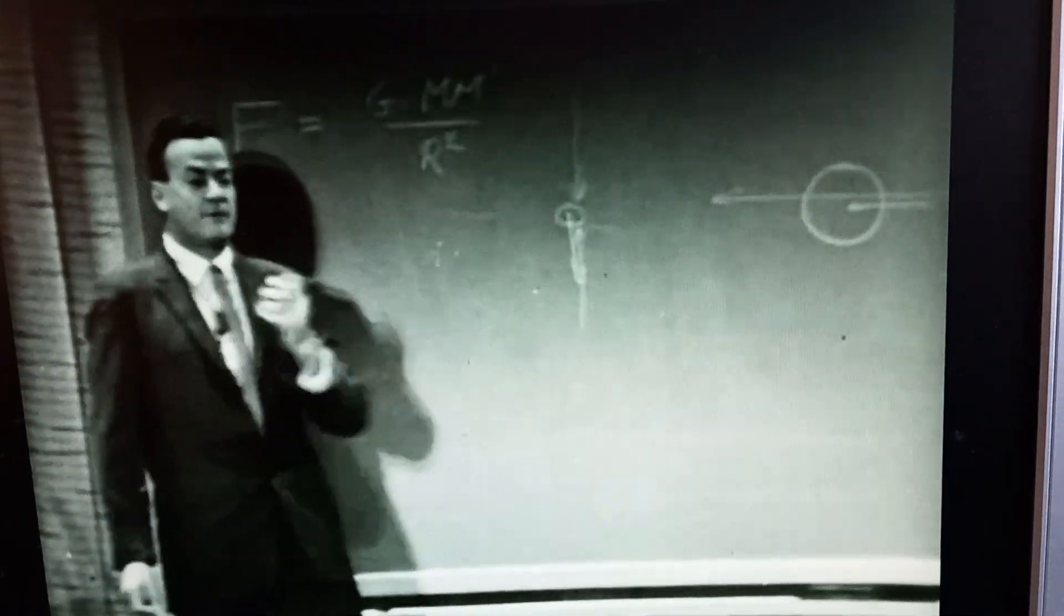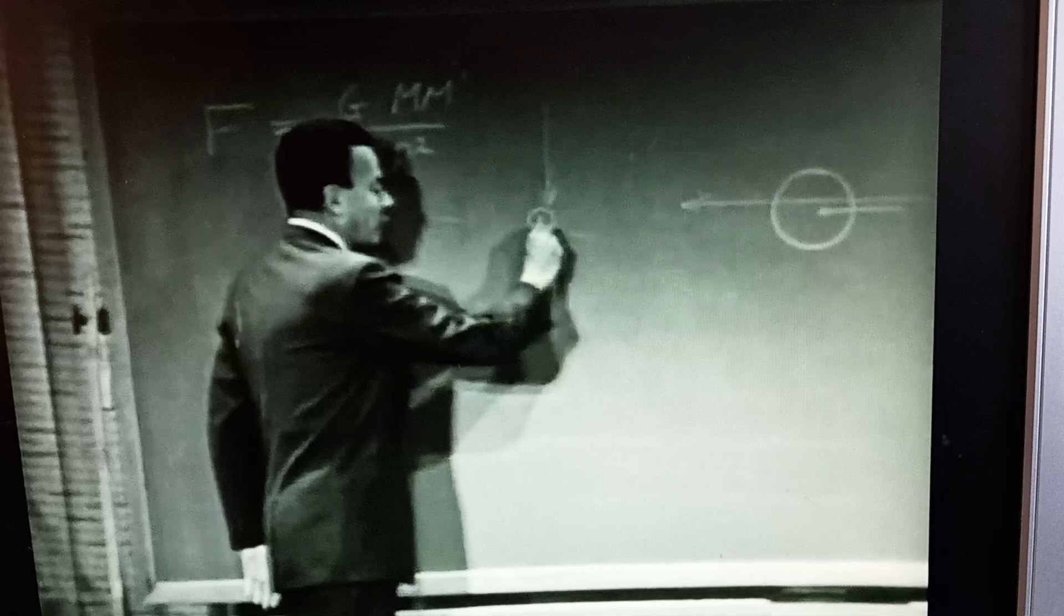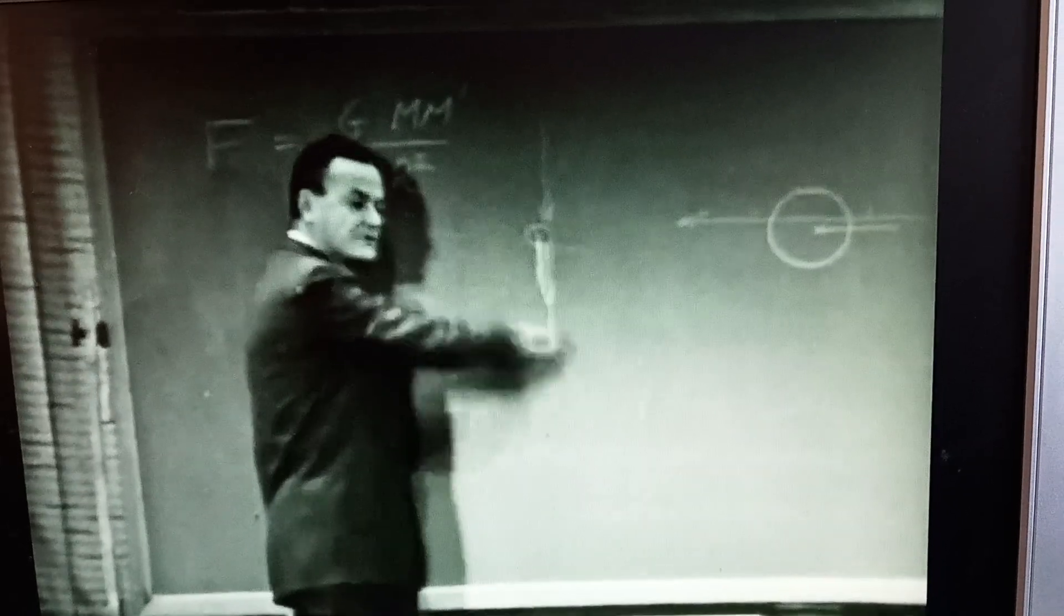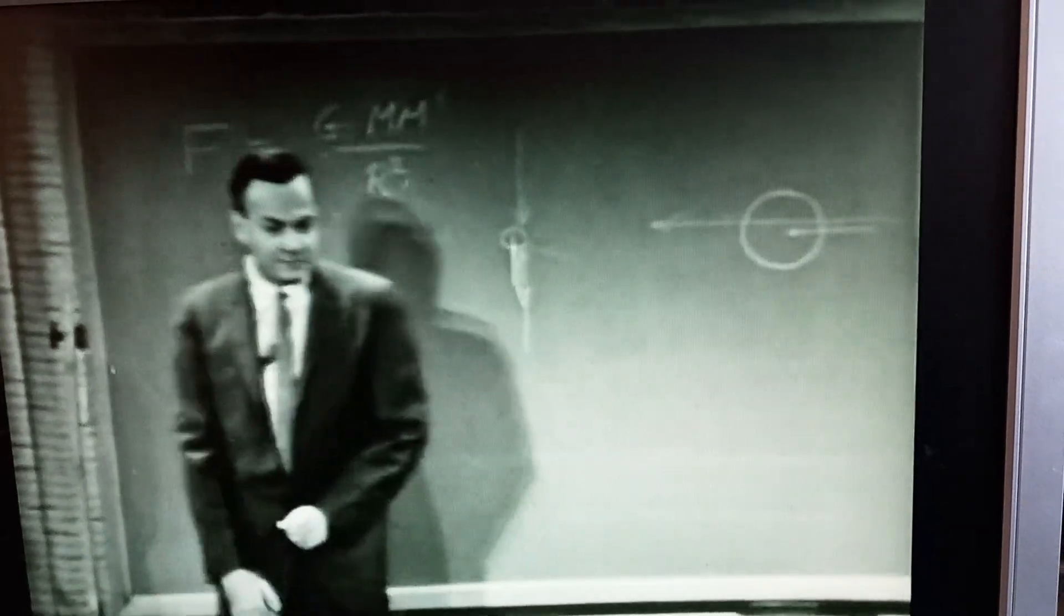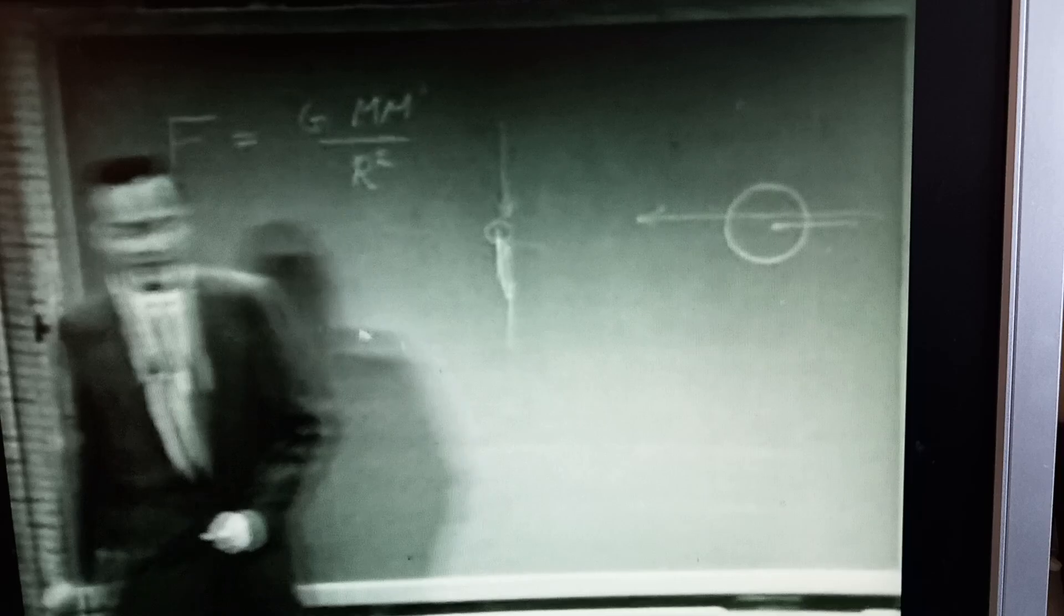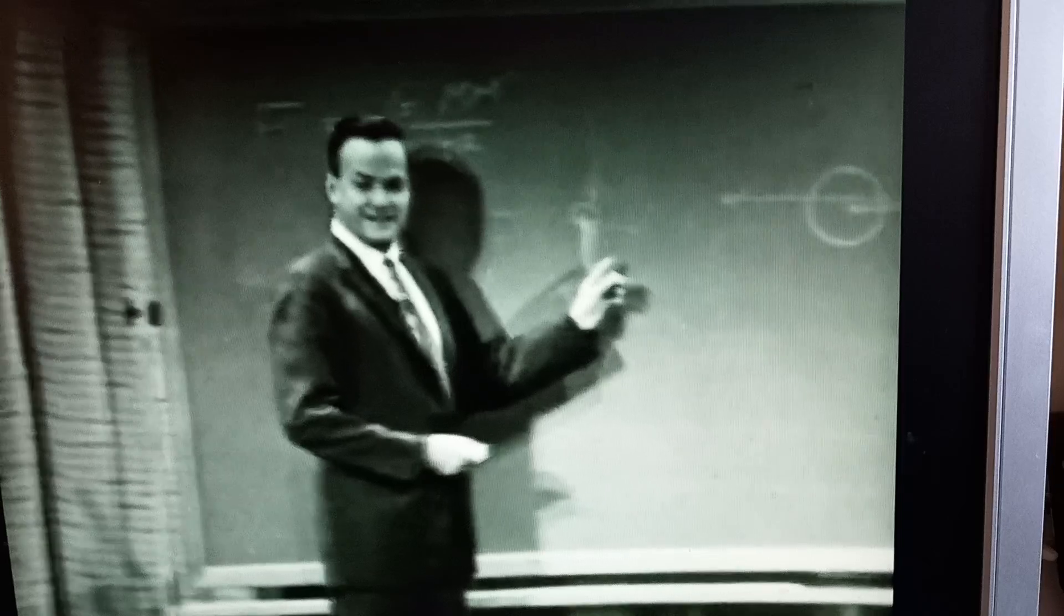So that more particles hit it from the front than from the back, and there would be a force also sideways whenever there was any motion. This sideways force would slow the earth up in the orbit and certainly would not have lasted the at least three or four billion years that it has been going around the sun. So that's the end of that theory.